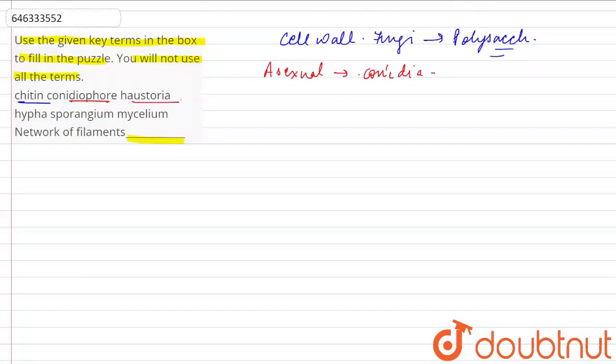Then, haustoria. Haustoria are outgrowths of somatic cells in hyphae. They supply nutrients by absorption.